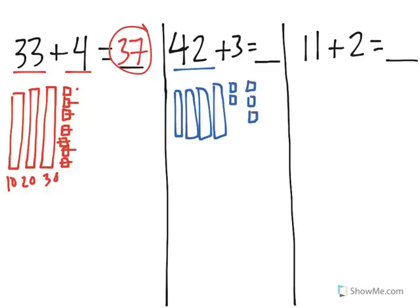Now if I started with 42 right here and I added in 3, that would make it 43, 44, 45.